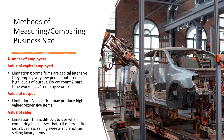Moving on to value of output — this is the amount that a business actually produces, and it is mainly prevalent in manufacturing industries where they're producing a lot of goods. A limitation of this is that a small firm may produce high-valued or expensive items, so you can't really directly compare two businesses. It depends on what they're actually producing and the value of those items.